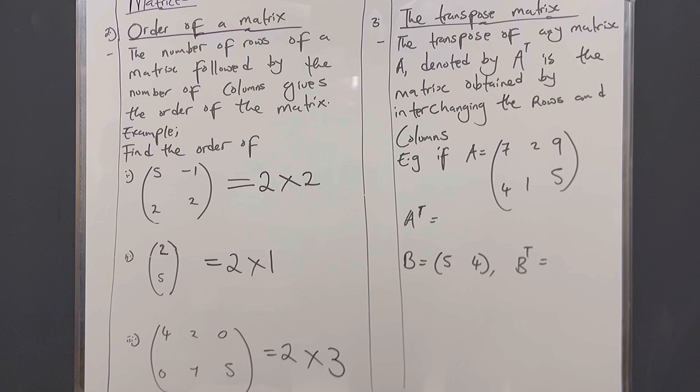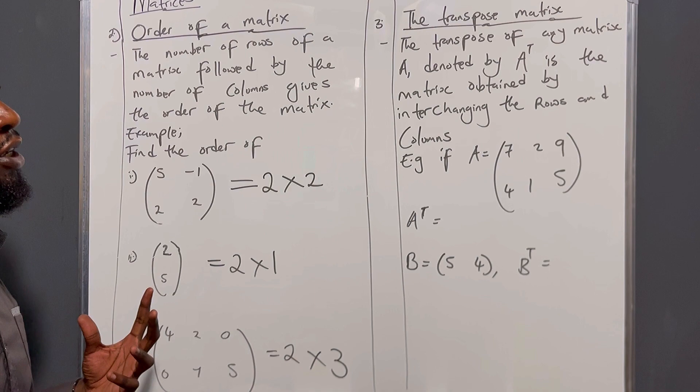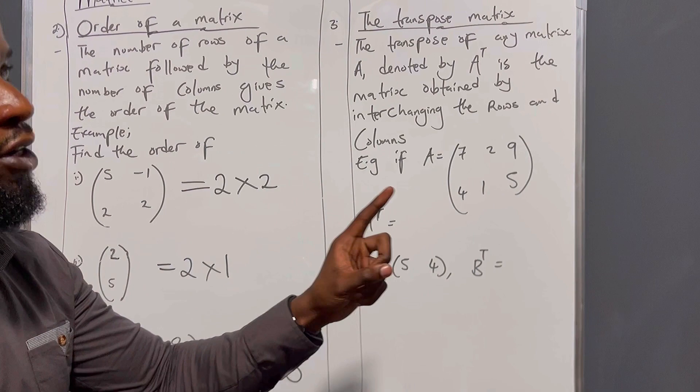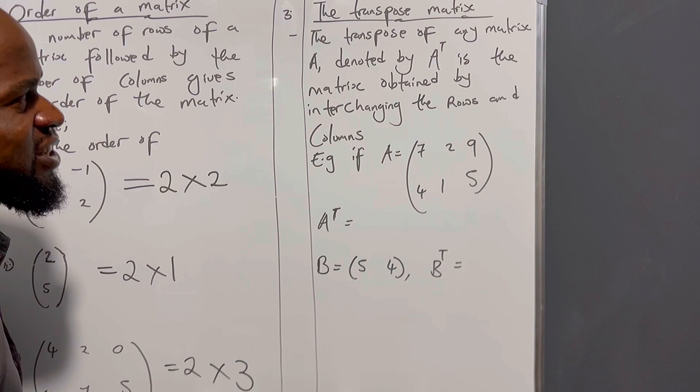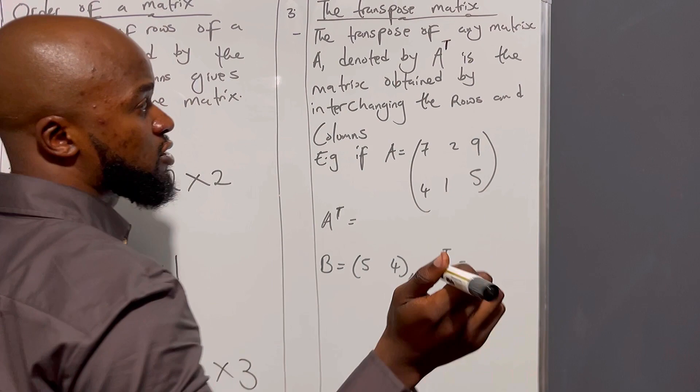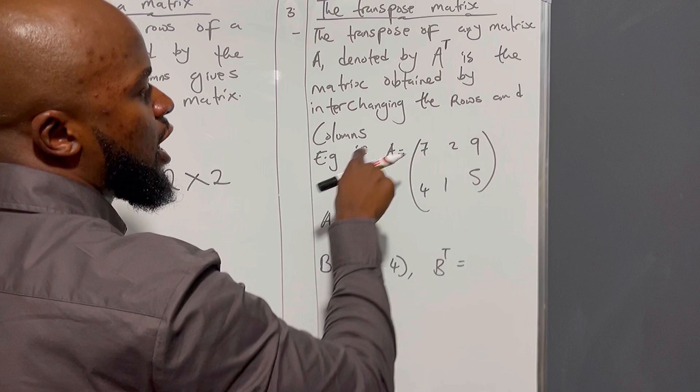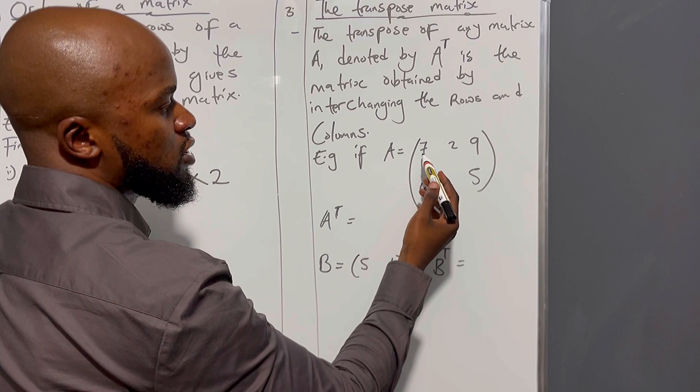Now we go to transpose — this is paper one. The transpose of any matrix A, denoted by A to the power T, is the matrix obtained by interchanging the rows and columns. So if A equals the matrix with rows 7, 2, 9 and 4, 1, 5 — the row 7, 2, 9 will become a column when transposed.